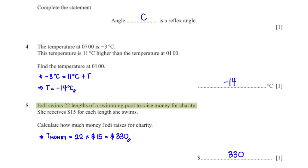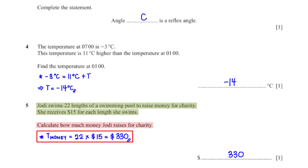Jody swims 22 lengths of a swimming pool to raise money for charity. She receives $15 for each length she swims. Calculate how much money Jody raises for charity. To get the total money she raises, we simply multiply 22 by $15, which gives us $330.